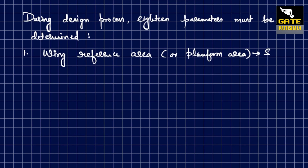The planform area is nothing but the projected area as seen from the top view when the wing is kept at zero angle of attack. The next design parameter is the number of wings — for example, monoplane, biplane, or triplane.